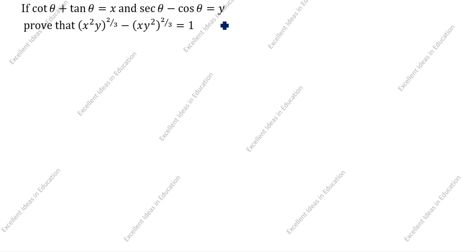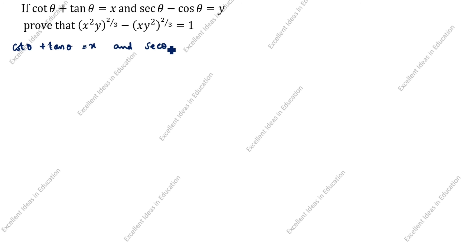If cot theta plus tan theta is equal to x, and secant theta minus cos theta is equal to y, prove that (x²y)^(2/3) minus (xy²)^(2/3) is equal to 1. We need to prove LHS equal to RHS. What is given in this question? Cot theta plus tan theta is equal to x, and secant theta minus cos theta is equal to y.